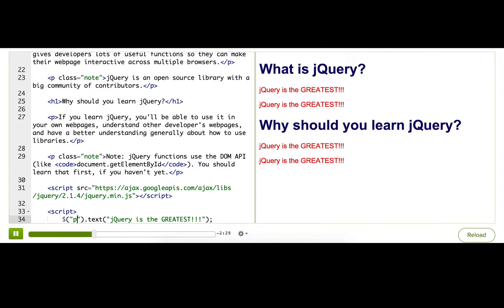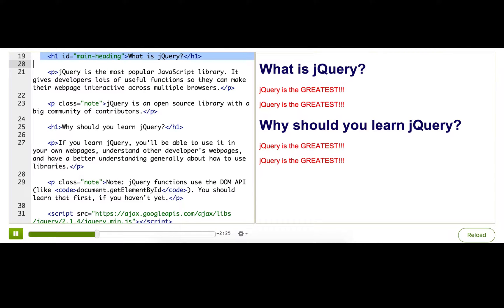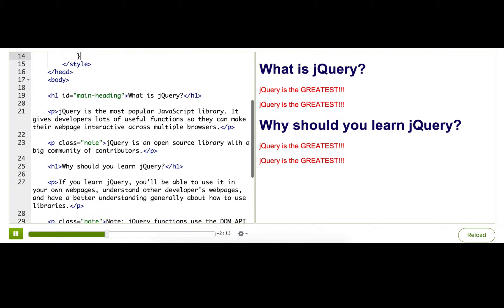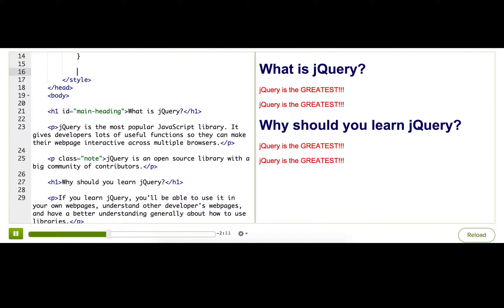Now I'm going to add another CSS rule to make the top headline purple. To make sure that I only select the top headline and none of the other h1s, I have to identify it by ID. That means that I start my selector with pound sign, and then I type the ID,